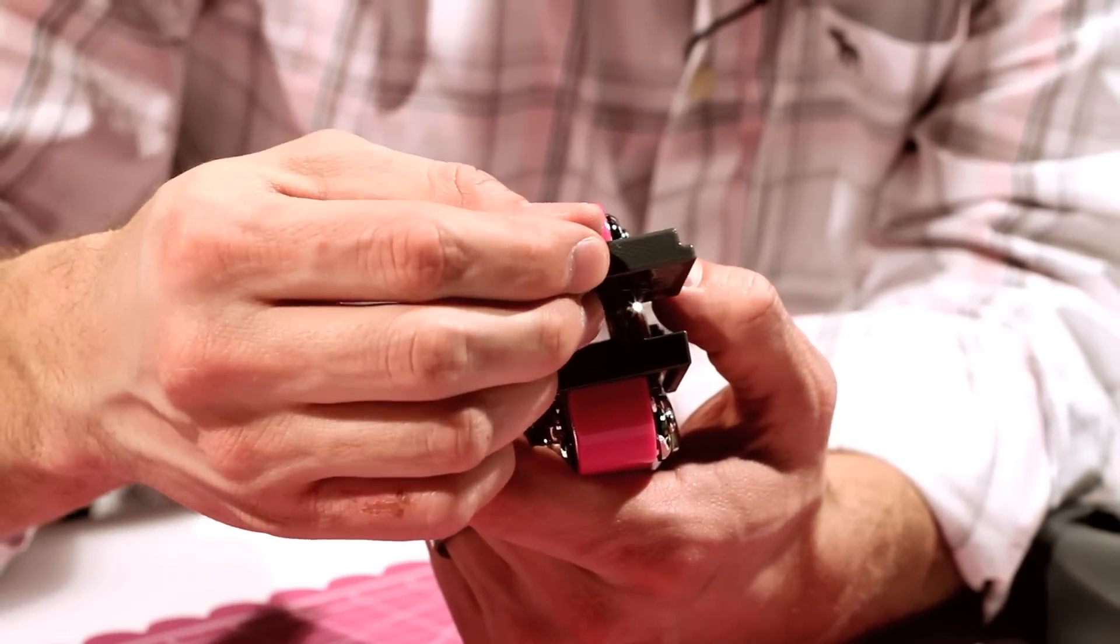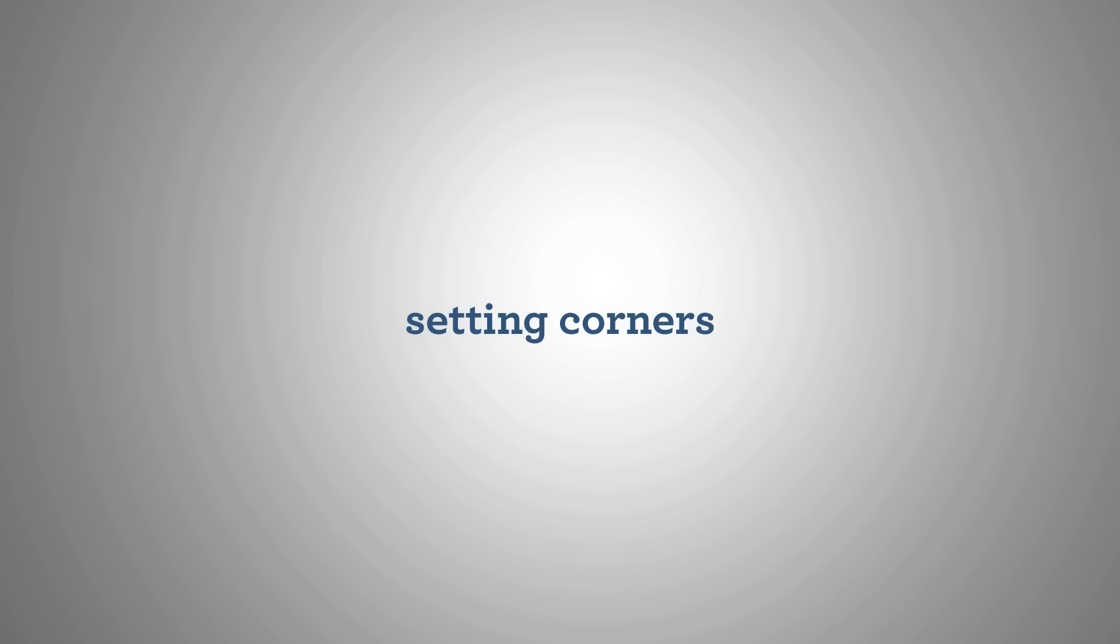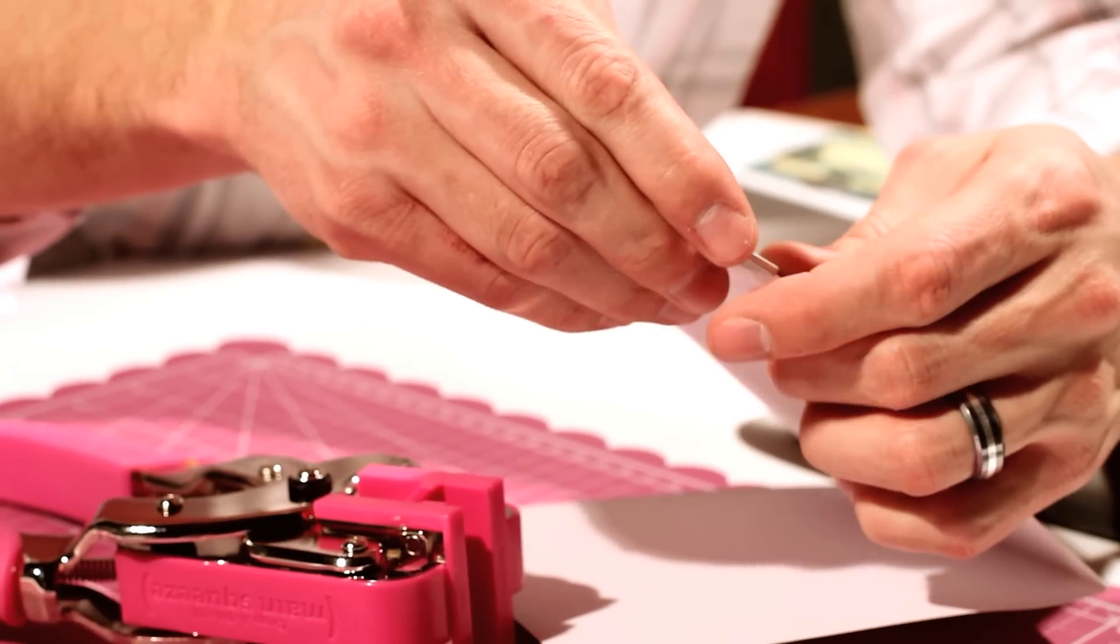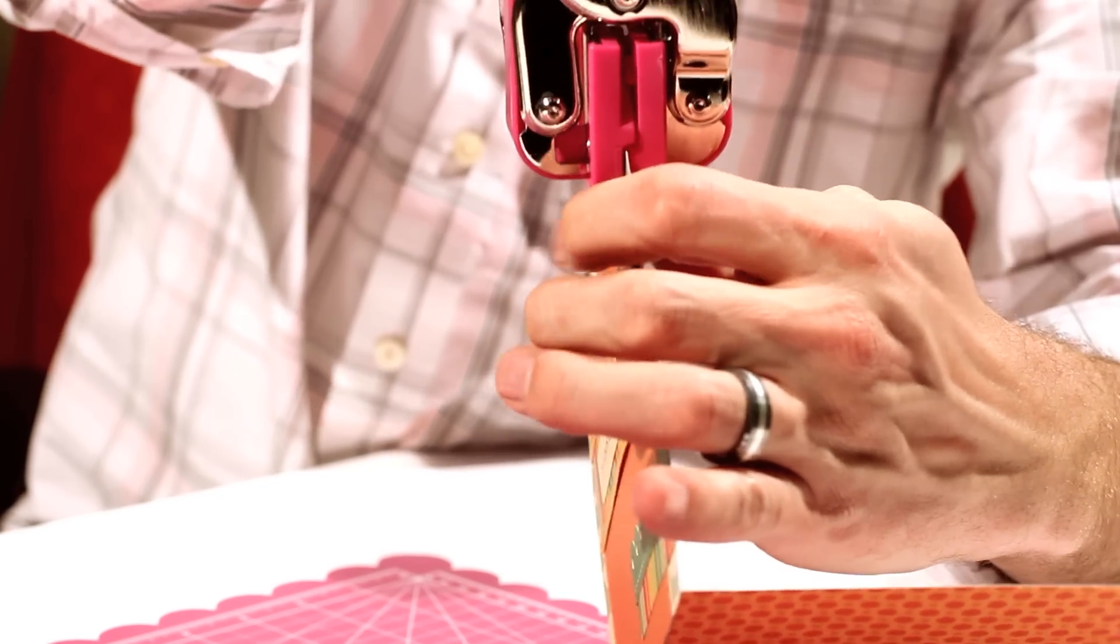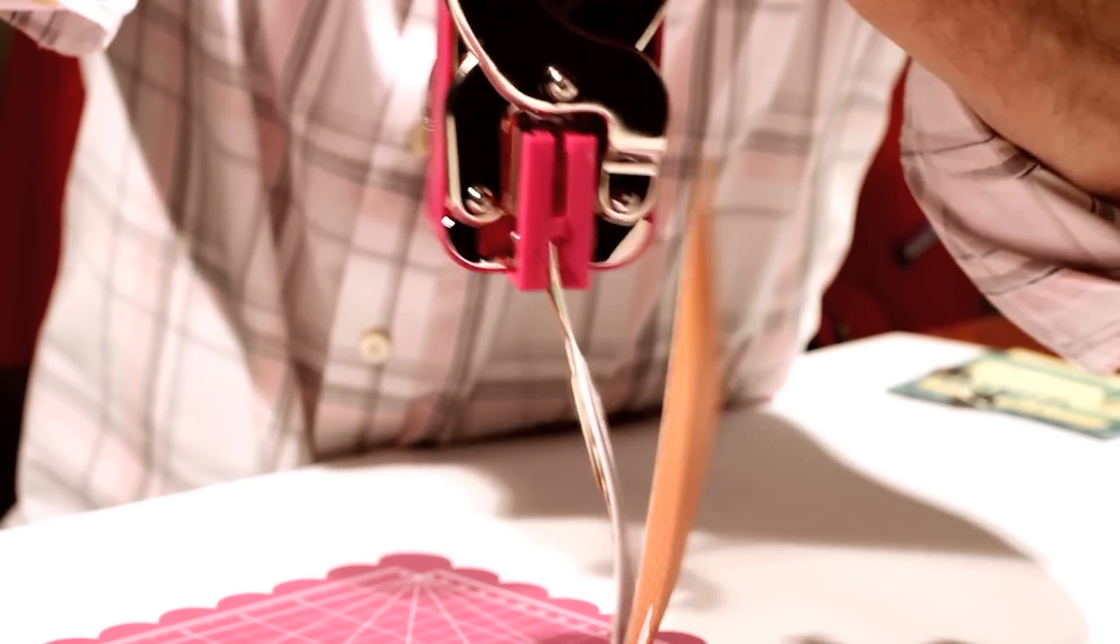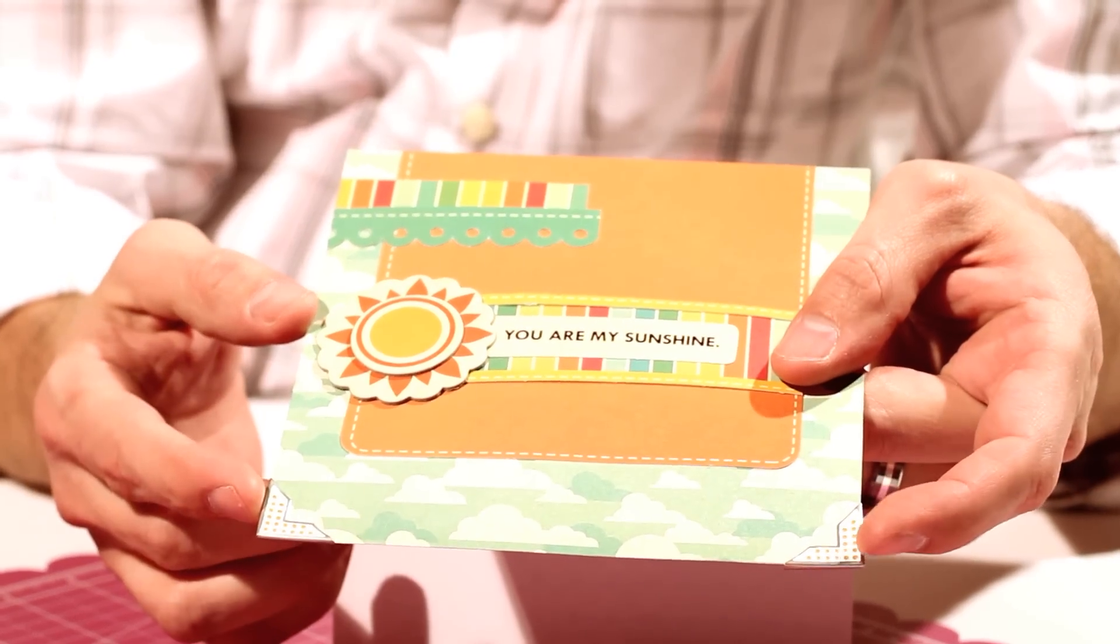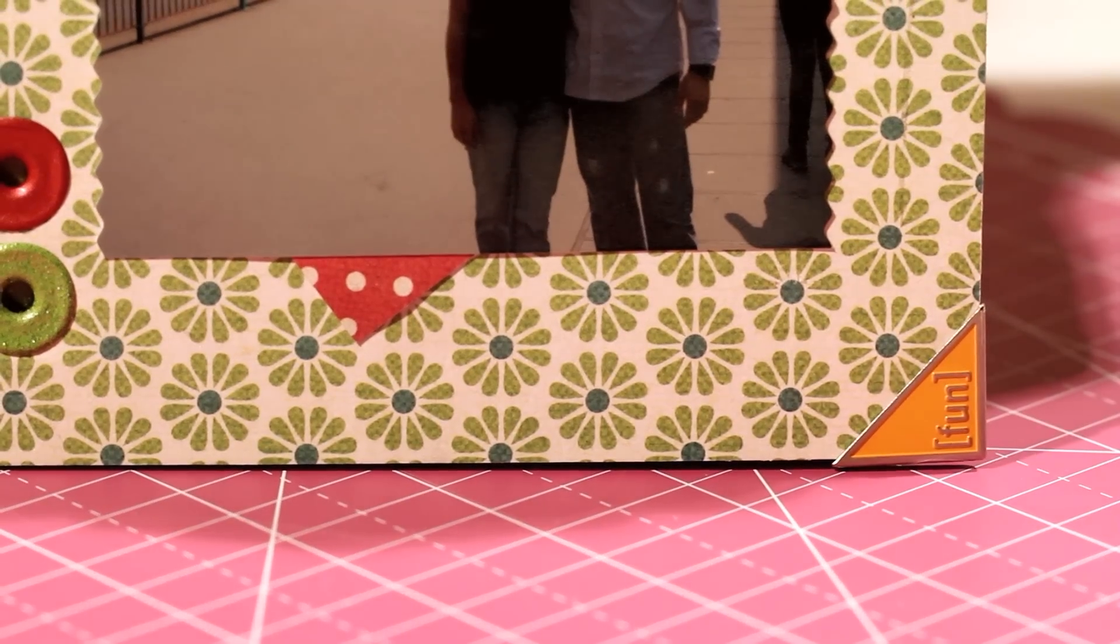If you're setting corners on your project, make sure the corner plates are attached to the tool and place your corner style of choice on the corner of your project. Take the tool and place the corner against the bottom plate, flush against the guide, and then squeeze. With very little effort, you've just set a corner on your project.